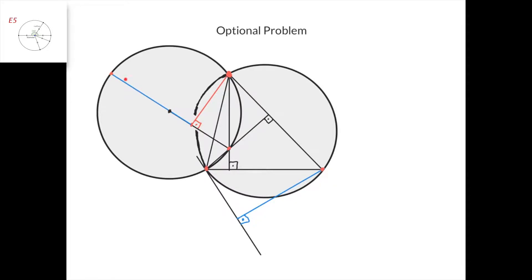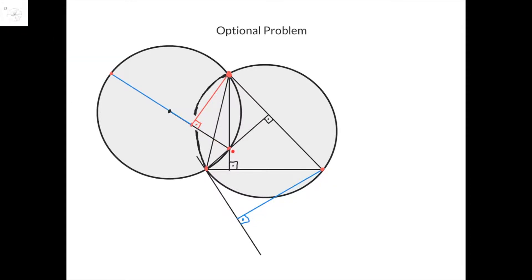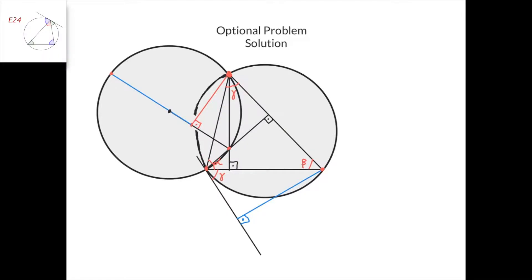So the center is the midpoint of this diameter. We drop a perpendicular from this point to this diameter here, and we need to prove that this segment length equals this segment length here. And here's the solution. I'm marking the angles of the triangle again alpha, beta, and gamma. Then from the alternate segment theorem,